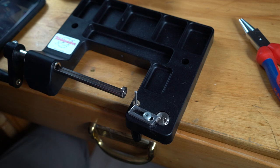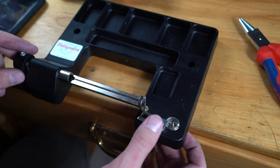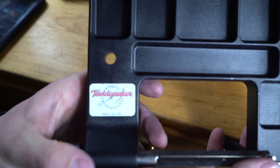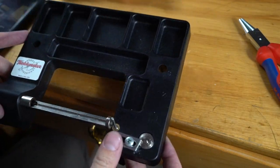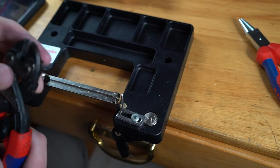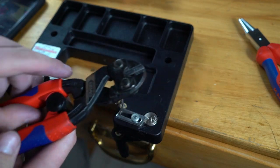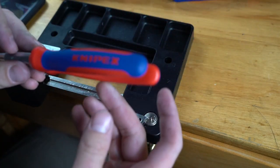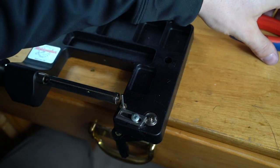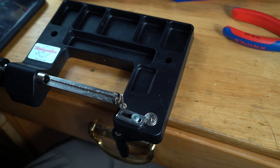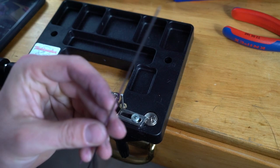Today we're going to be making our shanks for the pigsticker musky fly. A few tools you'll need: the Boggs Tackle Maker, a good pair of cutters, the Nipex round nose pliers, and of course, wire.